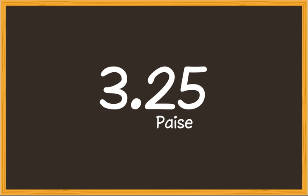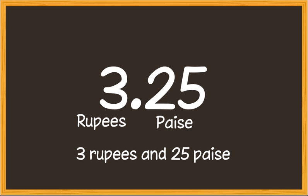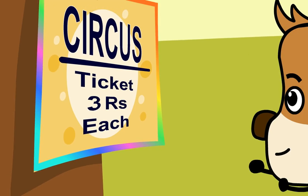Or we can simply put a point after two digits from the right of the given number showing paise. The digits on the left of the point indicate the number of rupees, and those on its right show the number of paise. So the amount will be three rupees and 25 paise. The ticket for the show is for three rupees.